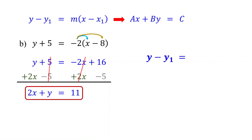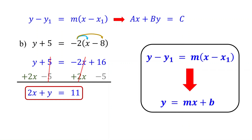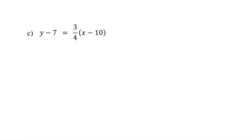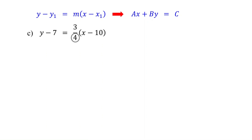To convert from point-slope form to slope-intercept form, check the link in the description. But first, let's work on a couple of examples that involve fractions. In this case, first eliminate the fraction. To do this, multiply both sides of the equation by the denominator of the fraction — so here, multiply by 4.